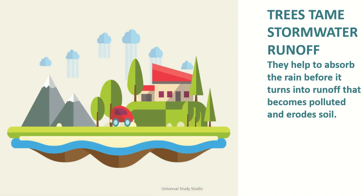Trees take stormwater runoff. They help to absorb the rain before it turns into runoff that becomes polluted and erodes the soil.